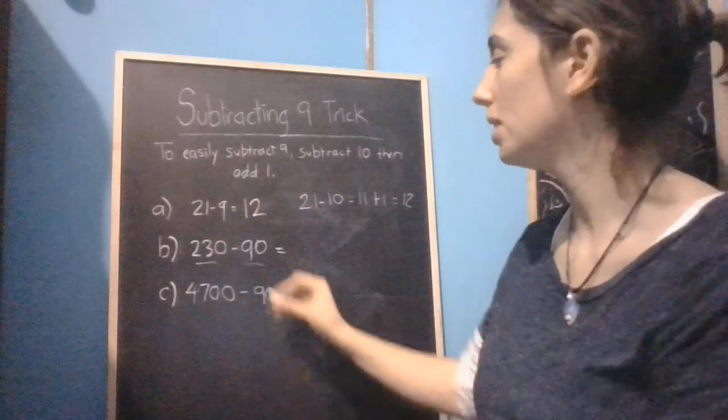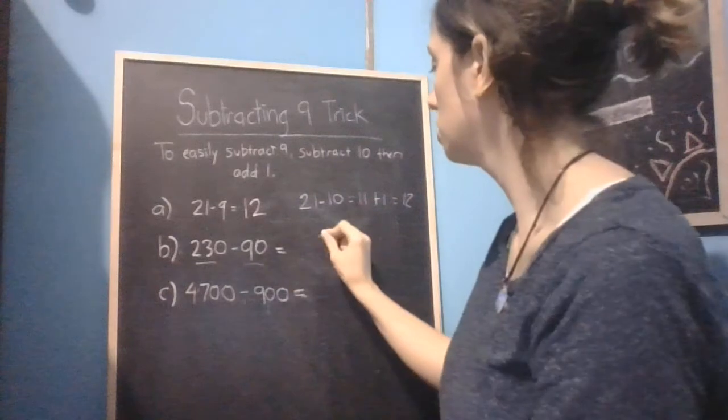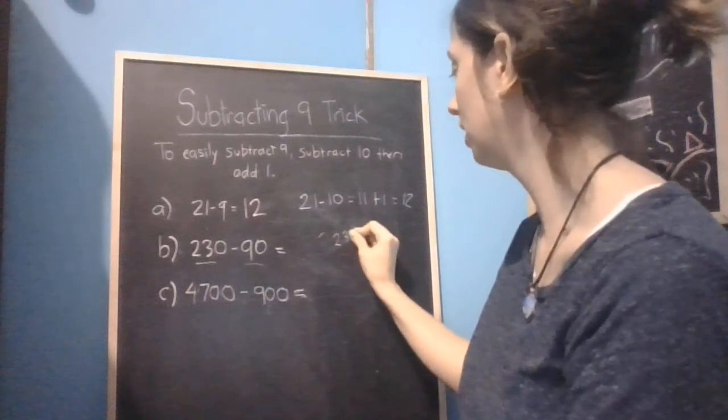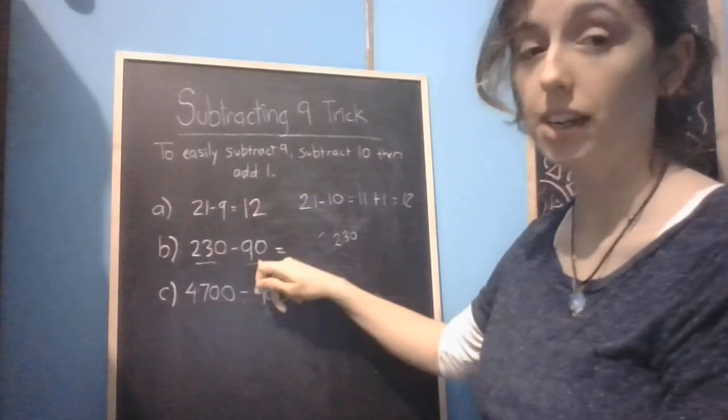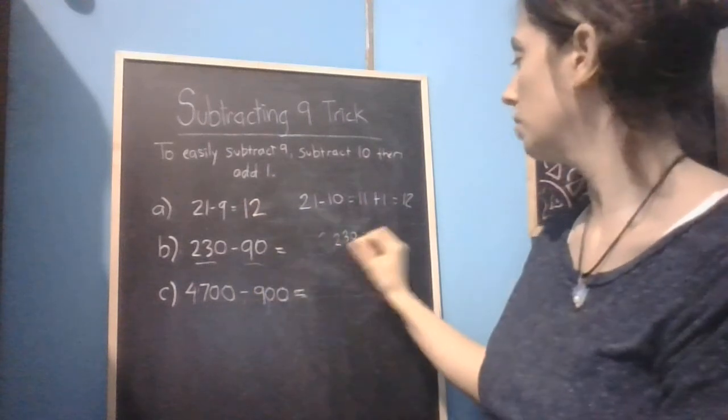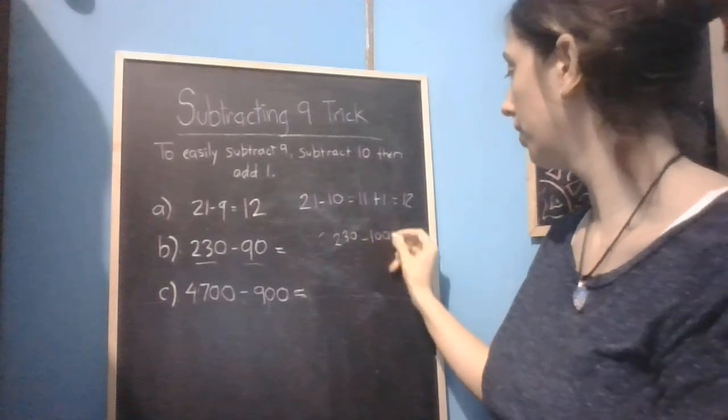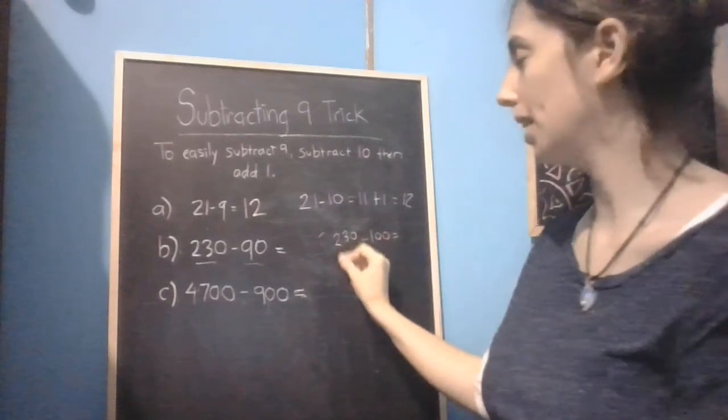So what we're going to do is we're actually going to go 230. So instead of rounding 90 up to 10, we're going to round it up to 100. So 230 minus 100 is 130.